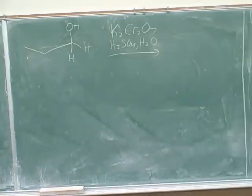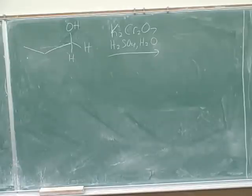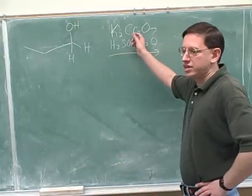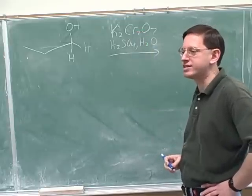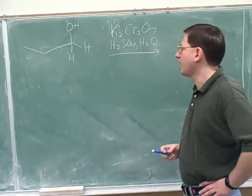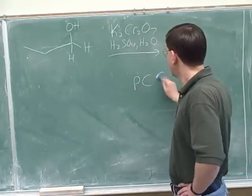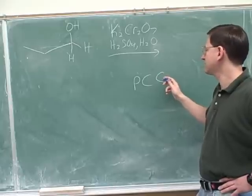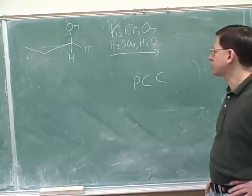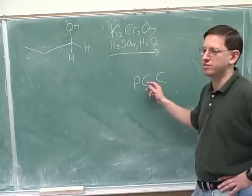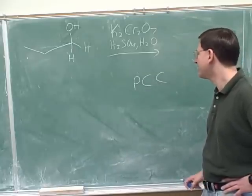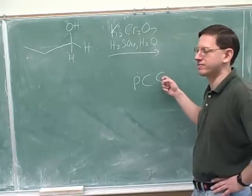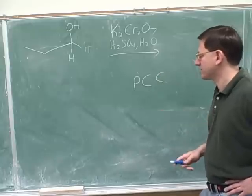Now let's draw the product. Is this an oxidizing agent or a reducing agent? Oxidizing agent — we have that memorized. By the way, all the oxidizing agents we use for oxidizing alcohols have chromium, so you can recognize them because they contain chromium. What does the C stand for in PCC? This C stands for chromate — PCC is pyridinium chlorochromate. You can look up its structure in your book. If you look it up, you will see there is a chromium in there, confirming that all these oxidizing agents for oxidizing alcohols contain chromium.